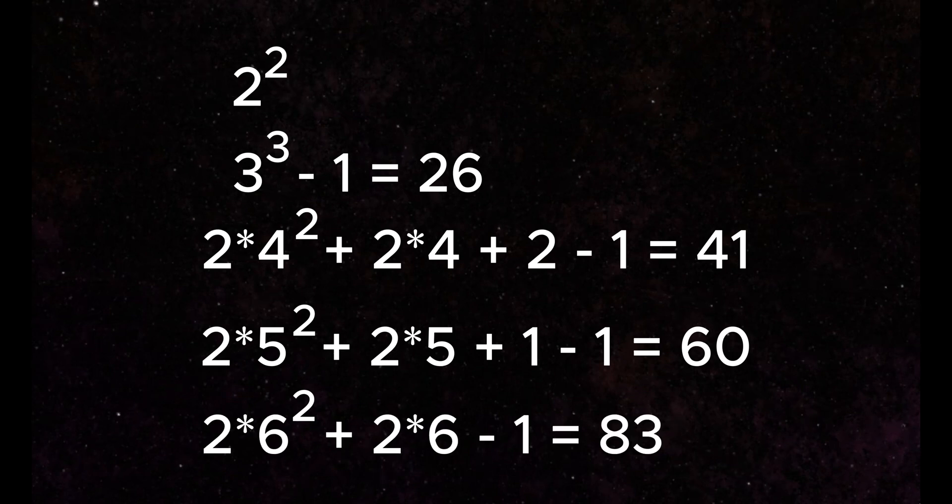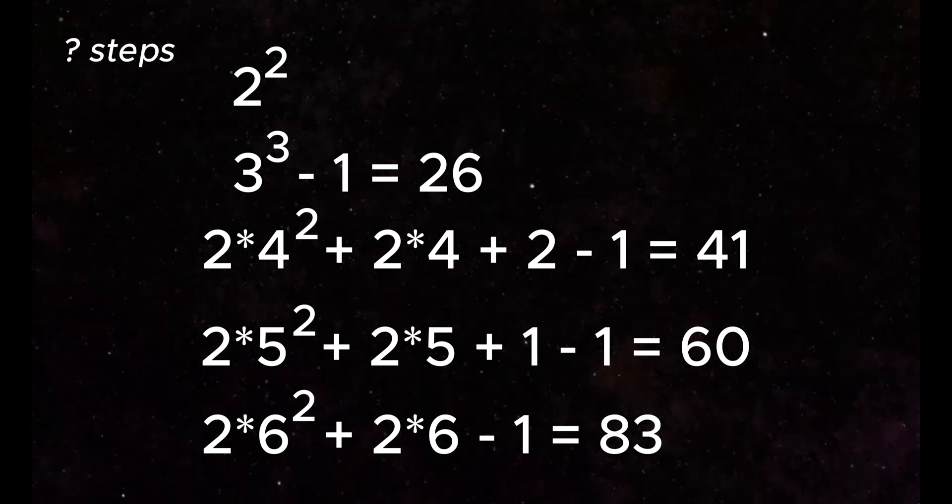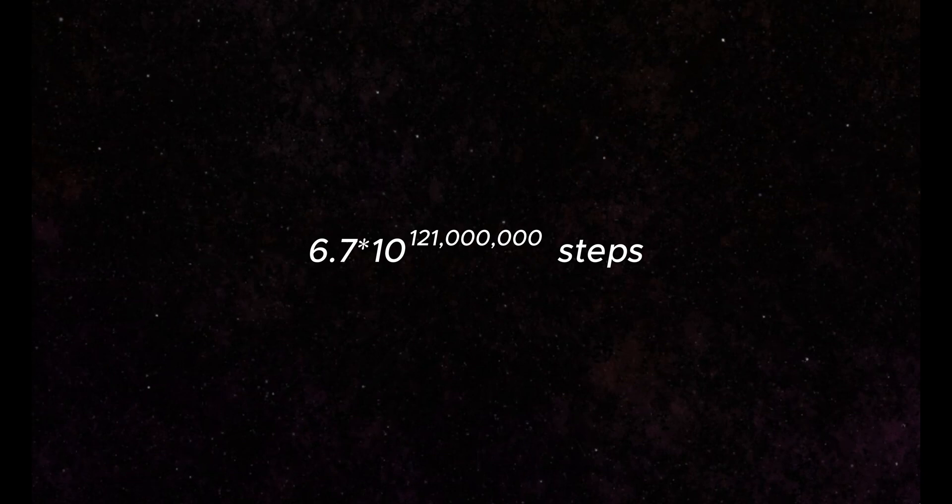Interestingly enough, even this sequence will reach the point where it will stop growing and then will start whittling down to 0. But how long will that take? Turns out, starting with 4, it would take around 6.7 times 10 to the 121 million steps before this sequence converges to 0. That's a huge jump.